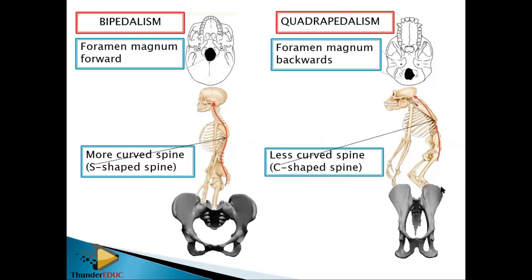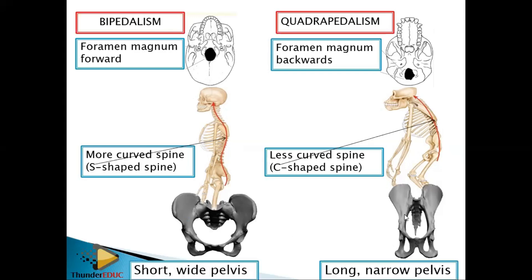For the pelvis: in bipedal organisms it is short and wide. In quadrupedal organisms it is long and narrow. You can interpret the pelvis dimensions visually — shortness and wideness for bipedal, longness and narrowness for quadrupedal.